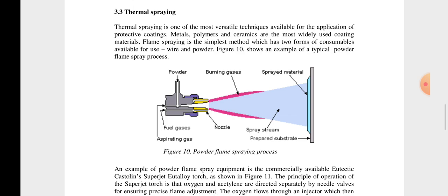The flame spraying is the simplest method which has two forms of consumables available for use - wire and powders. That is powder, fuel gases, aspirating gas, nozzle, spray steam, and prepared substrate.